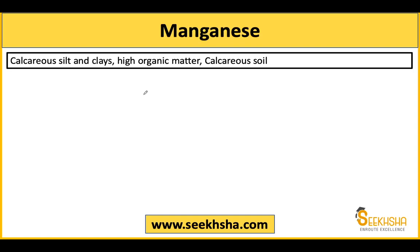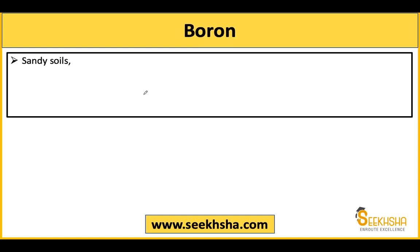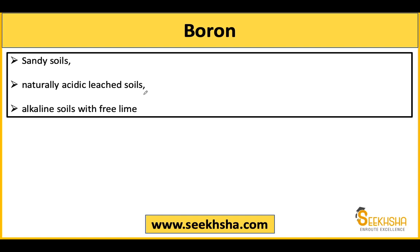For manganese deficiency, you will see it in calcareous soils, clay soils, and soils with high organic matter. For boron deficiency, it occurs in sandy soils, naturally acidic leached soils like laterite soils where heavy rainfall causes leaching, acidic soils, alkaline soils, and salty soils where free lime is present — all these conditions lead to boron deficiency.